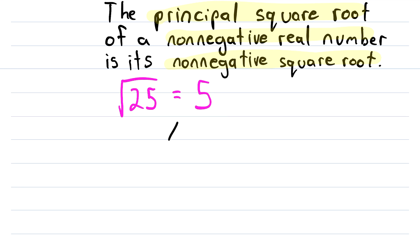So if we want to write that x is equal to the negative square root of a non-negative real number, we need to use the negative sign. So if we write that x is equal to the negative square root of 25, this means that x is equal to negative 5, because this is a negative 1 multiplied by a positive 5, which is, of course, negative 5.